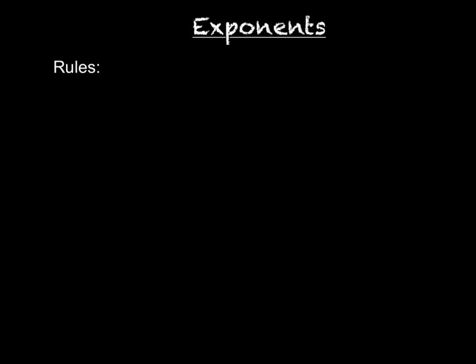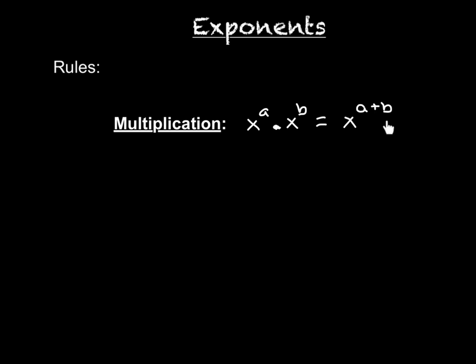Let's talk about how exponents work. The first rule we're going to talk about is called the multiplication rule. Whenever you're multiplying two terms with the same base, all you have to do is just add their exponents. So x to the a times x to the b is just x to the a plus b.